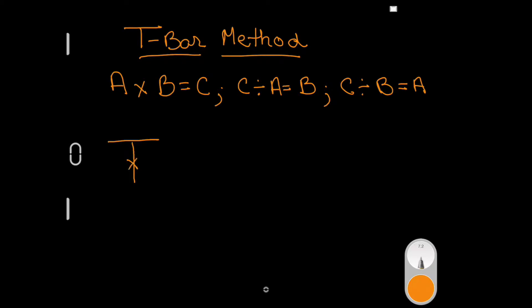What that means is if you have A times B equals C, that would look like A times B equals C. Or if you have C divided by A it equals B, or you could have C divided by B equals A.